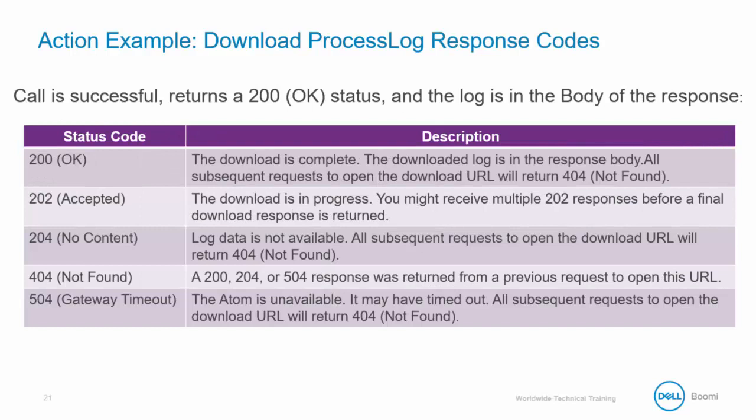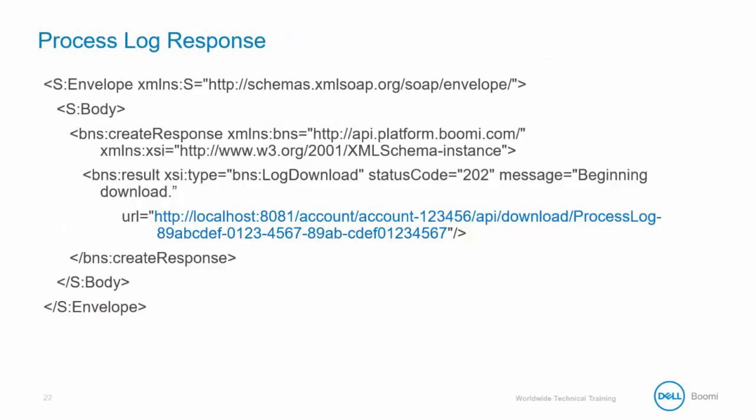The response code is returned in the body of the response. A 200 status means successful, along with other possible status codes. Here is the SOAP response to the example process log request, with the URL highlighted in blue.